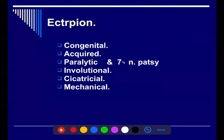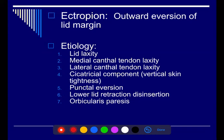Ectropion is also categorized into congenital and acquired. Acquired types include paralytic — like 7th nerve palsy — involutional, cicatricial, or mechanical. In acquired ectropion, there is eversion of the lid margin. The etiology usually involves lid laxity, medial canthal tendon or lateral canthal tendon laxity. The cicatricial component involves vertical skin tightness. It can occur with congenital cicatricial ectropion, where there is shortening of the anterior lamella — commonly seen in Down syndrome patients.